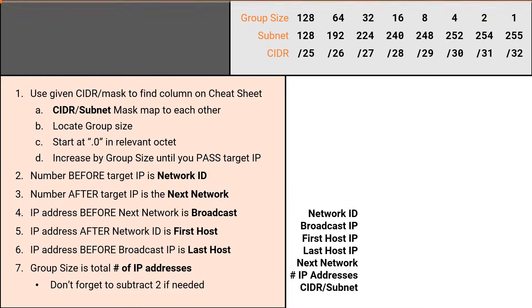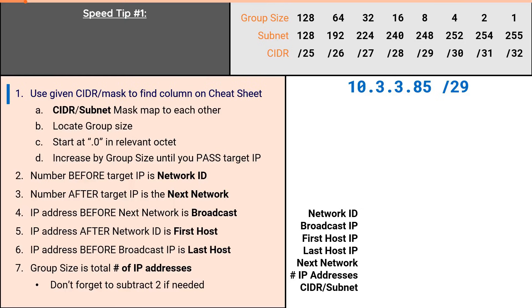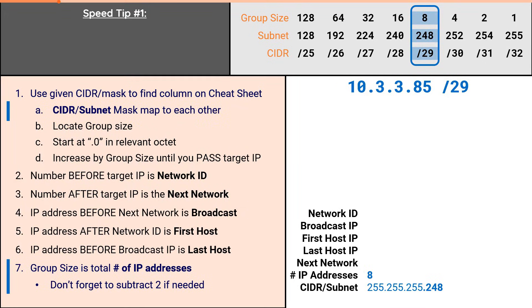We will demonstrate the first speed tip using the problem 10.3.3.85/29. It'll start like any other problem. We are provided a slash 29, which puts us in this column. The column provides a subnet row of 248 and a group size of 8, which gives us our subnet mask and total number of addresses. Solving for these two attributes cannot be made any quicker, as they are simply reading numbers from the cheat sheet.